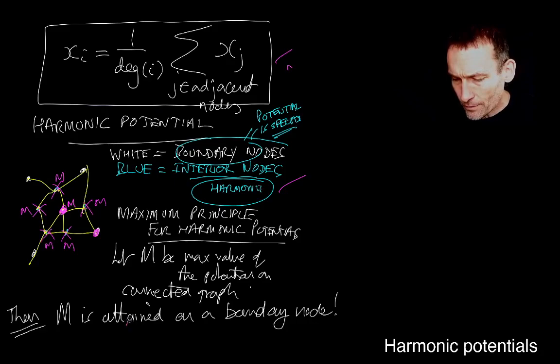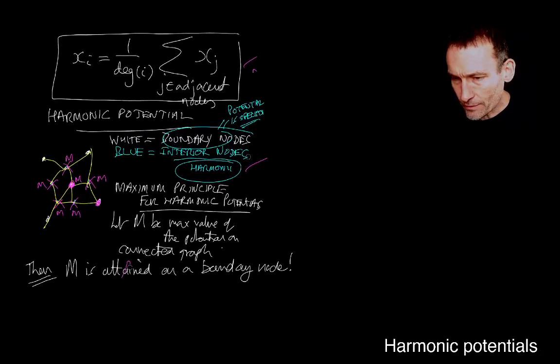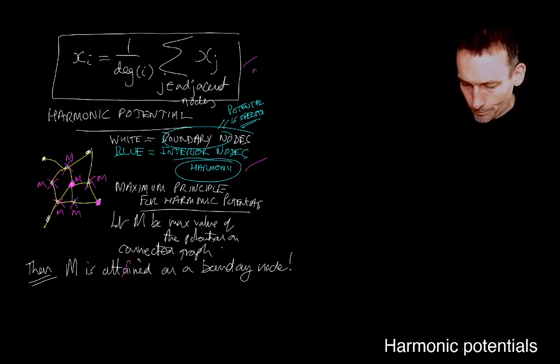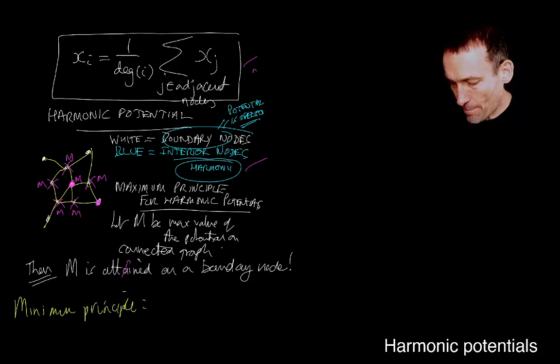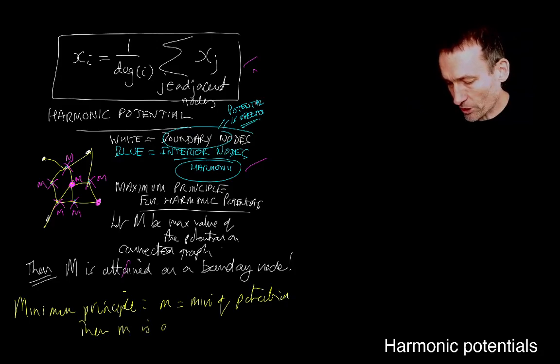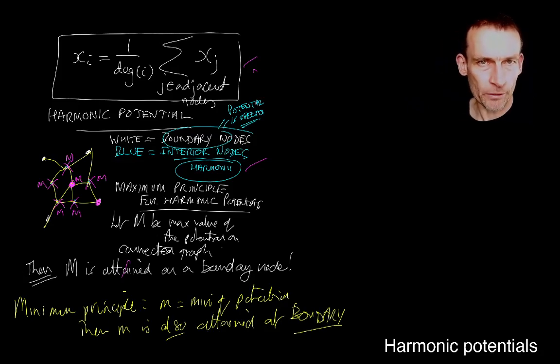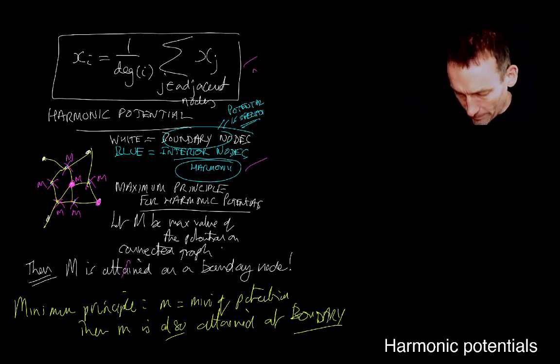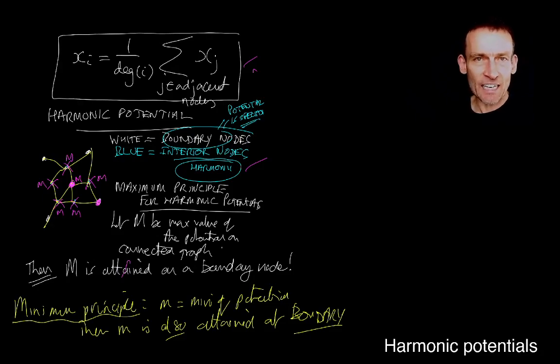Well, it's very easy, I think, for you to see now what the minimum principle is. It says that if little m is the minimum of the potential on the connected graph, then m is also attained at the boundary. When I say boundary, I mean one of the boundary nodes. So that's the minimum principle. And the argument is exactly the same, except everywhere I just said maximum, you replace by minimum and kind of go the other way. Not going to go through that.